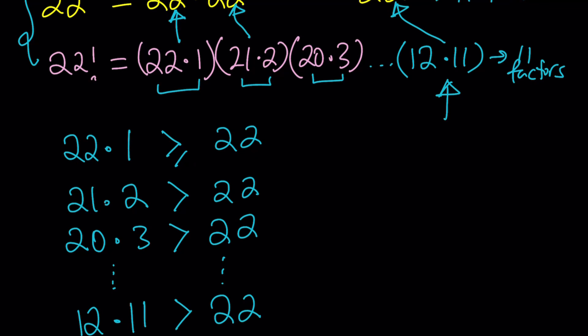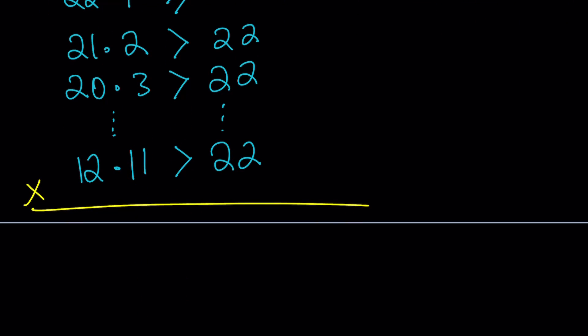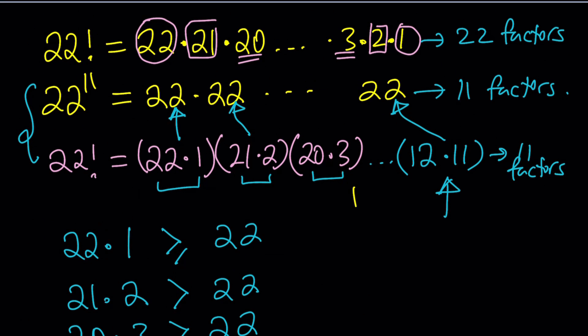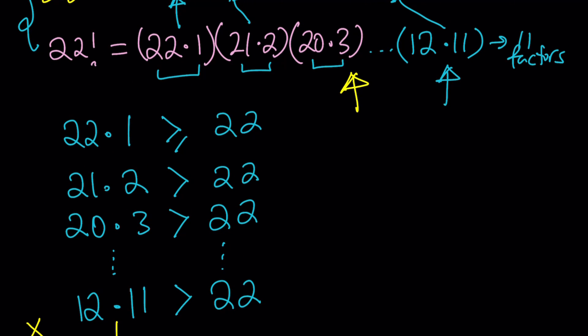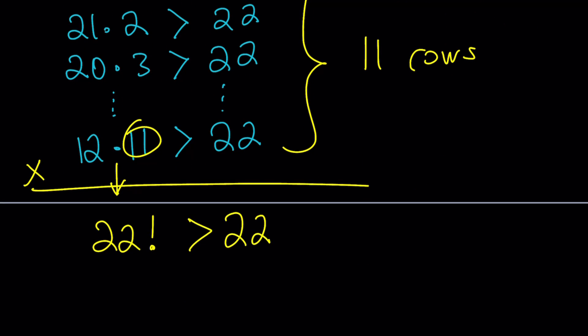Now, how does this comparison help us? Let's go ahead and multiply in columns. The left-hand side is going to give you 22 factorial, because that's where we got that product from. And the right-hand side is basically, and by the way, we have 11 rows here, 11 rows. So the right-hand side is going to give you 22 to the power 11. And there you go. That's the result. 22 factorial is greater than 22 to the power 11.